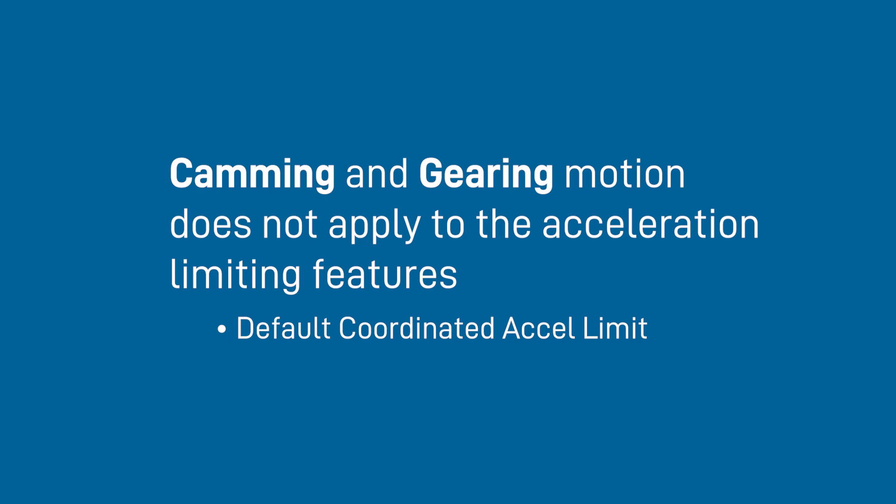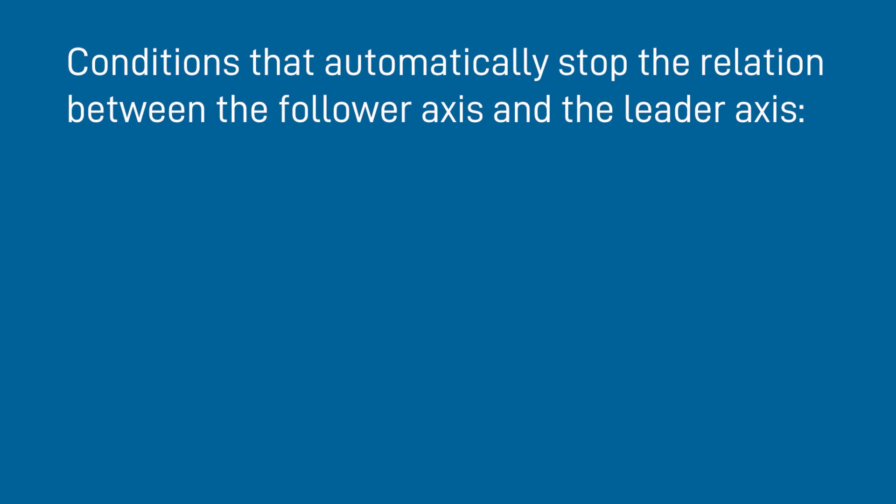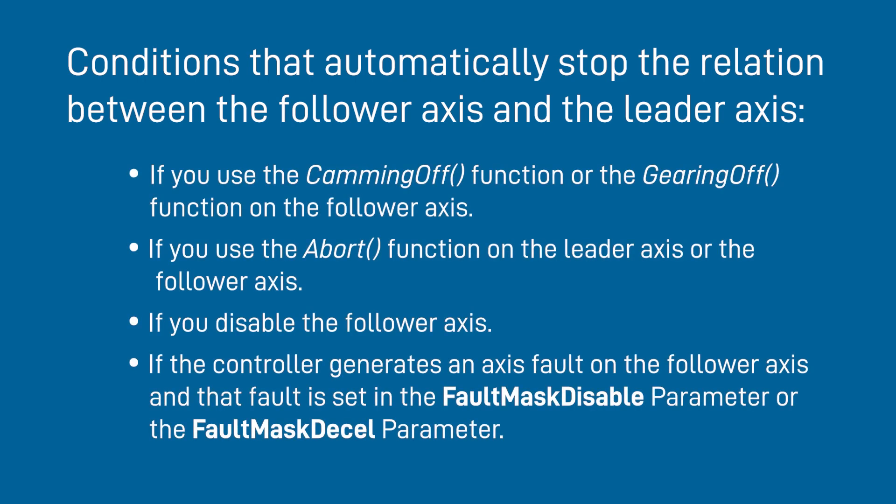So what are some of the limitations of these features, or other tidbits of information you should know about camming and gearing? Well, to begin, there are certain features like acceleration limiting, such as the coordinated accel limit, that just don't apply with camming and gearing functions. Additionally, there are a couple different scenarios and situations that will stop the relationship between a follower axis and your leader axis. These include outright disabling the function using the abort function, disabling the follower axis, or generating an axis fault on the follower axis based on the fault mask disable or fault mask to cell parameters.